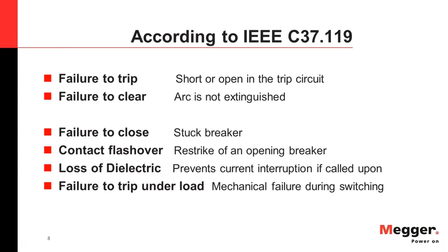Starting with what is Breaker Failure. According to IEEE C37.119, which is a standard for Breaker Failure Protection, breaker failure is categorized into several types. The first two are Failure to Trip and Failure to Clear. According to the standard, these two are called Breaker Failure. The rest of them can lead to a Breaker Failure, but they are not categorized exactly as Breaker Failure.